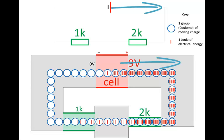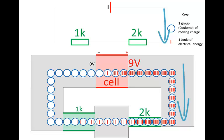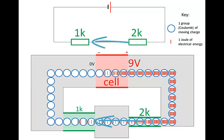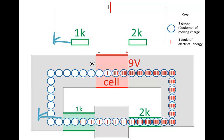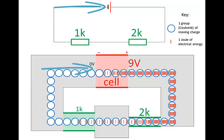The charges move out of the positive terminal of the cell, round through this good conductor, through the 2K resistor, through this good conductor, through the 1K resistor, and round back into the negative terminal of the cell.